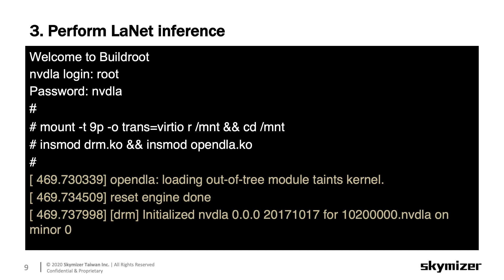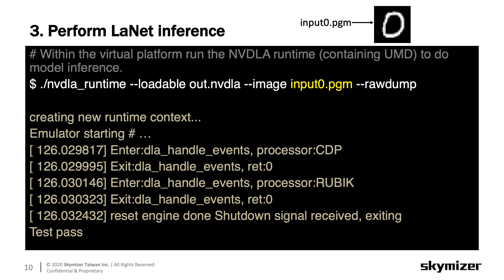When you see the Linux prompt, please login as root and the password is nvdla. After logging into the Linux prompt, you may use the mount command to mount the shared folder, and use the command insmod to install the drivers we need. Up to this point, everything is ready for running model inference. Here, we use an input file, input0.pgm, to demonstrate how to run model inference to recognize a handwritten digit. The program nvdla_runtime will invoke the user-mode driver, pass the loadable file, and call the KMD APIs for inference. The inference simulation will take a few minutes.